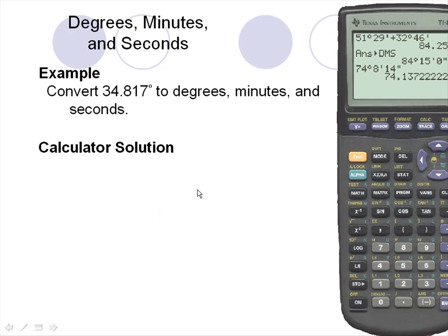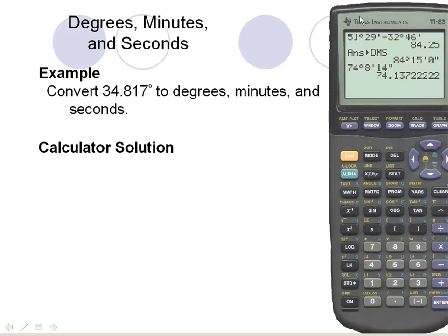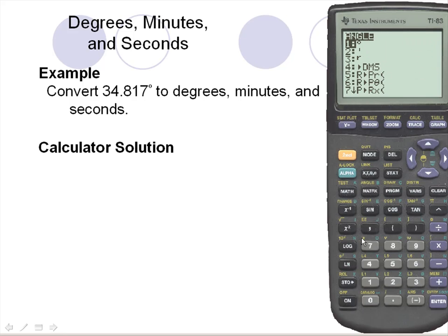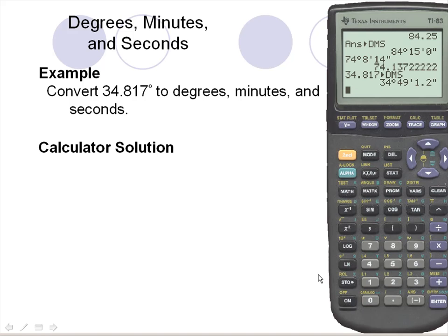Let's take a look at the calculator solution. In order to convert to degrees, minutes, and seconds, I'll simply enter the decimal degree 34.817. Since I'm in degree mode, there's no need to enter the degree symbol. To change this to degrees, minutes, and seconds, I'll go into the angle section of the calculator and scroll down to the fourth option, DMS. We see that 34.817 degrees is 34 degrees, 49 minutes, and 1.2 seconds.